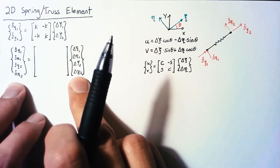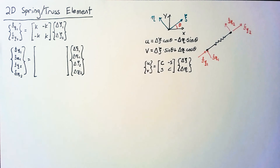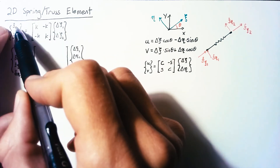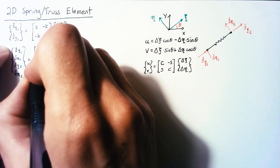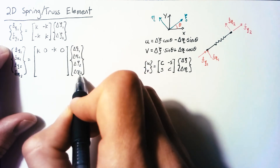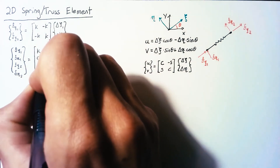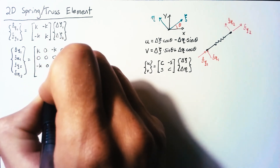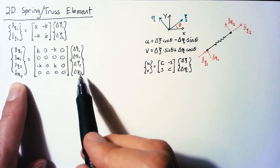With these force and displacement vectors, we need to make sure the equations are consistent between our 1D and 2D formulations. The equation for f-xi1 gives: k times delta xi1, nothing times delta eta, negative k times delta xi2, and nothing times delta eta. The row for the eta direction must be all zeros since the force in eta is zero. For the third row we get negative k, zero, k, zero, and the bottom row is again zeros. This is the fully 2D system of equations for our local element.